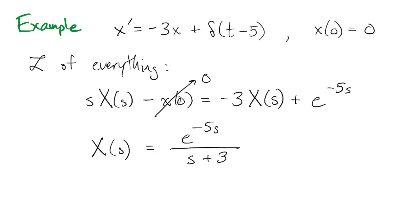So how do we invert this thing to find the x of t? Well, I'm going to write capital X as the product of e to the negative 5s times capital Y of s, which I define to be 1 over s plus 3.